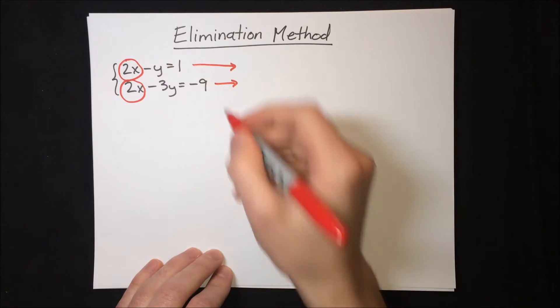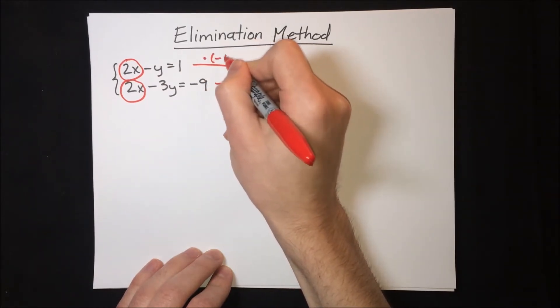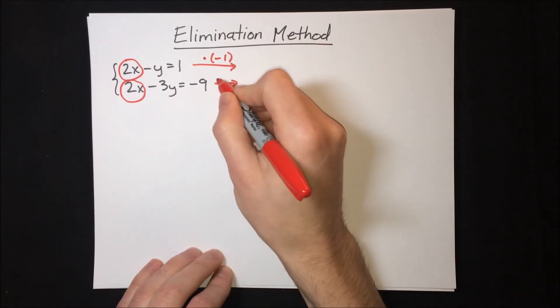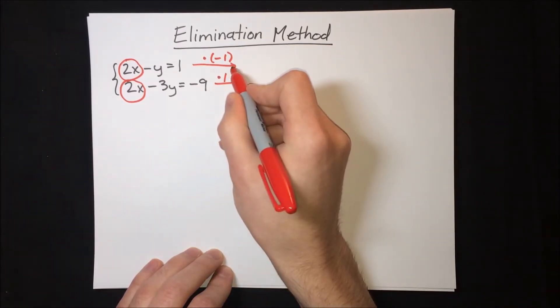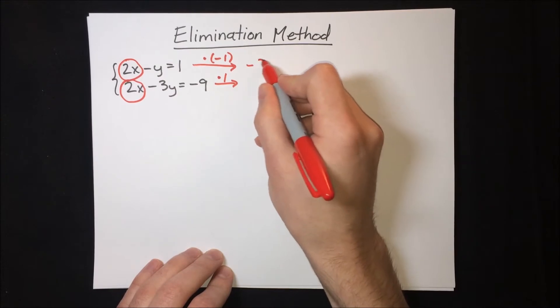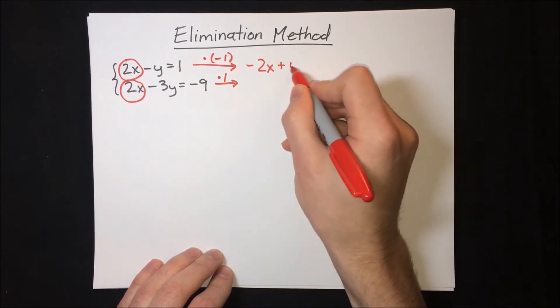We'll multiply the top equation by negative 1 and we'll keep the bottom one the same. In other words, we'll multiply it by 1. So the top equation, when we multiply it by negative 1, that becomes negative 2x plus y